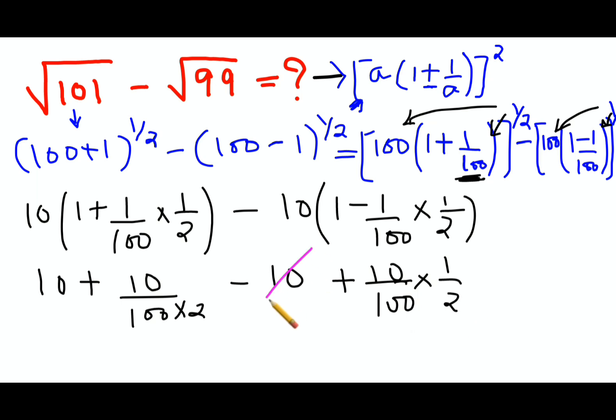So now if you see, things are cancelling. This is cancelling this, and this is also cancelling. So basically I'm left with 1 upon 20 plus 1 upon 20. So that gets you 2 upon 20. So answer comes out to be 1 upon 10, that is nothing but 0.1. This is the closest answer for this particular question.